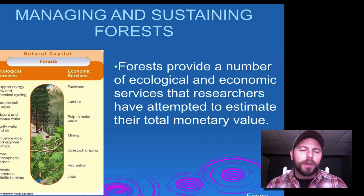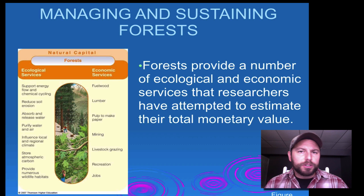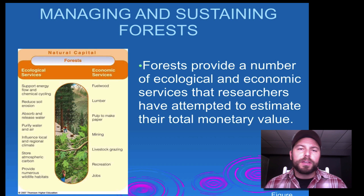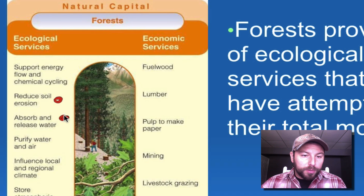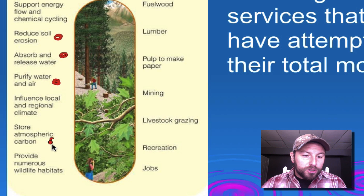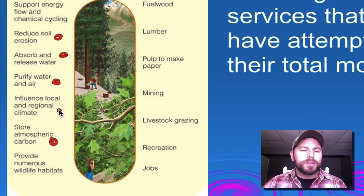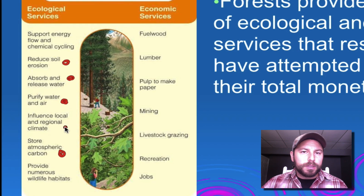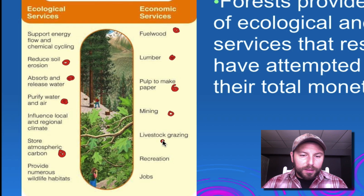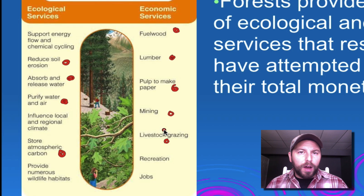There are a couple of different ways we can look at managing or sustaining terrestrial biodiversity, and one of the biggest areas we need to look at are forests. Forests themselves provide a huge number of economic and ecological services, as you can see in this diagram. Ecological services include reducing soil erosion, absorbing and releasing water, purifying air and water, and storing carbon. Economic services include fuel wood, lumber for building, making paper, mining, and livestock grazing.